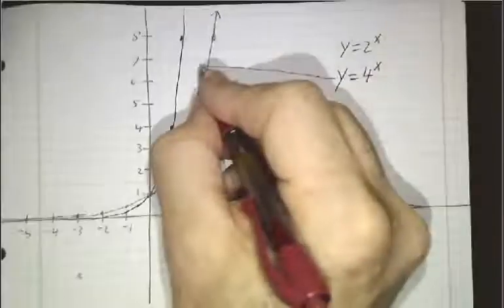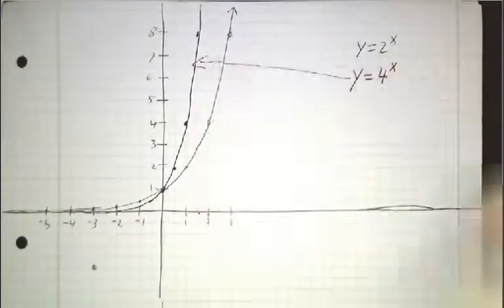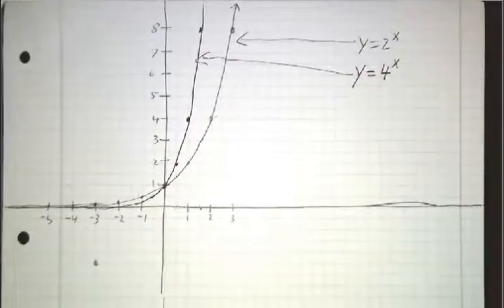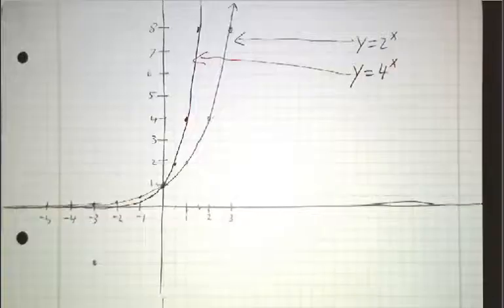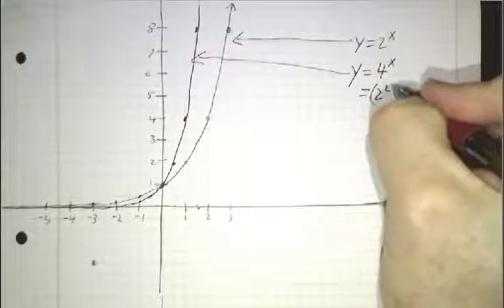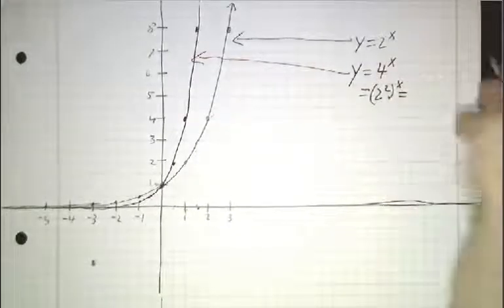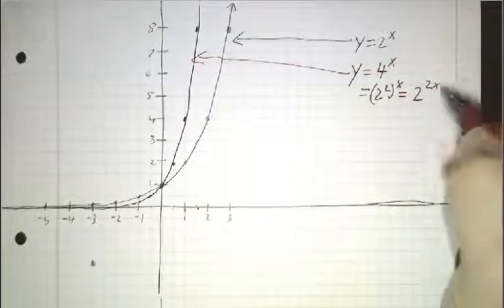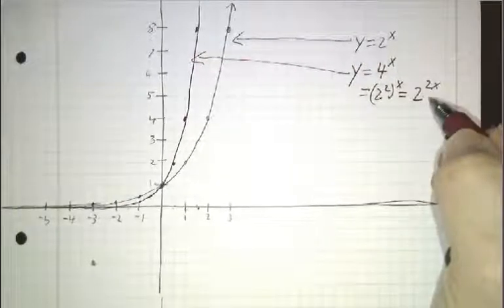So, y equals 4 to the x is this curve, y equals 2 to the x is this curve, and they're really the same kind of curve, only spread out. And the reason that they're the same curve, because 4 to the x is 2 squared to the x. By our laws of exponents, that's 2 to the 2x. So, it's the same function, only half as wide.